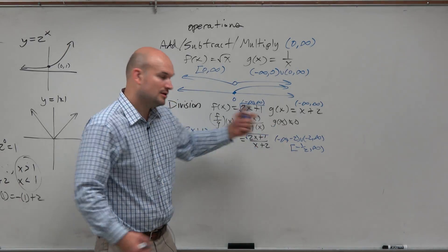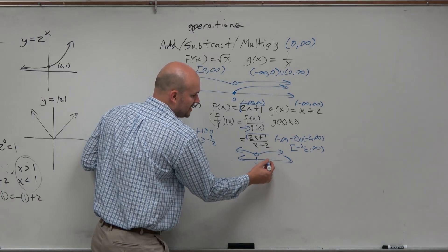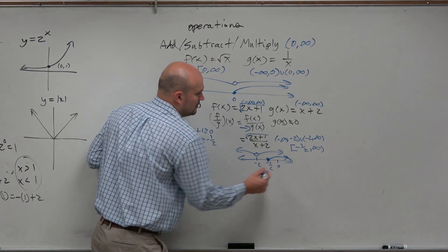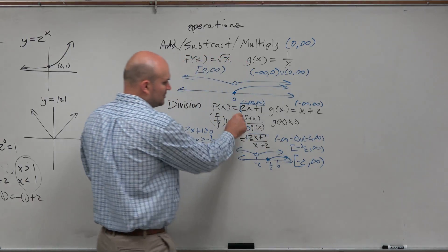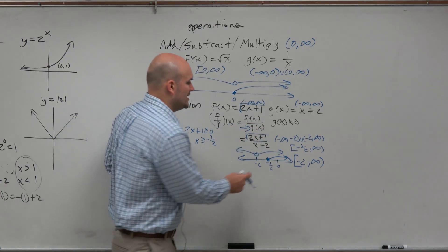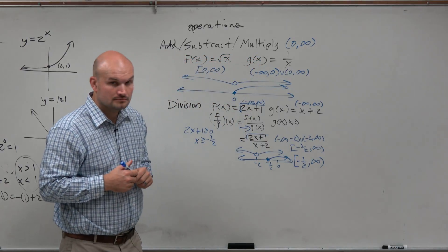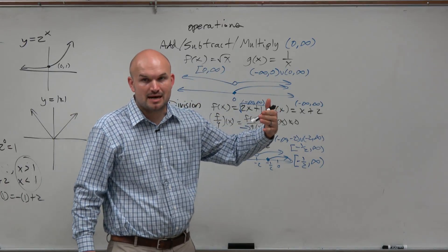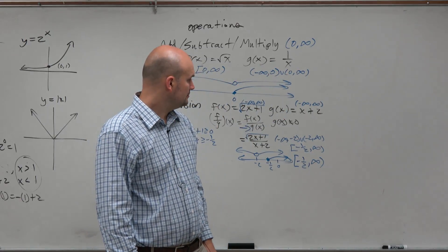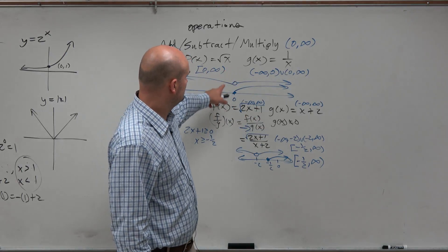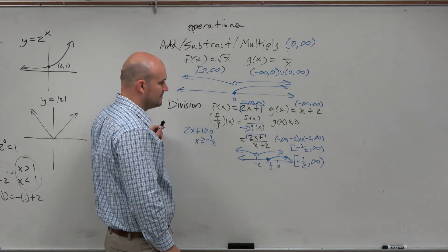Let's graph it. All real numbers except for negative 2, and x has to be greater than or equal to negative 1 half. Negative 1 half would be here, and here's 0. We look at what values the function is defined for — from negative 1 half included to infinity, excluding negative 2. So that's the domain. If it wasn't the radical, then it would just have been all real numbers except negative 2. But I introduced the radical, creating an extra restriction.